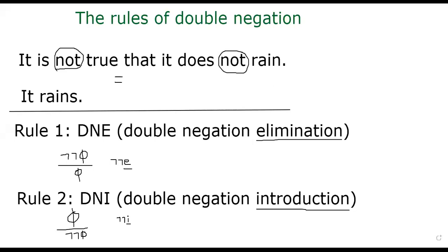In this segment, I will continue the rules of natural deduction, but focusing more on the double negation part. Let's consider this example. It is not true that it doesn't rain. So we have two nots that I have circled here, right? If you think about it, it's just same as it rains.